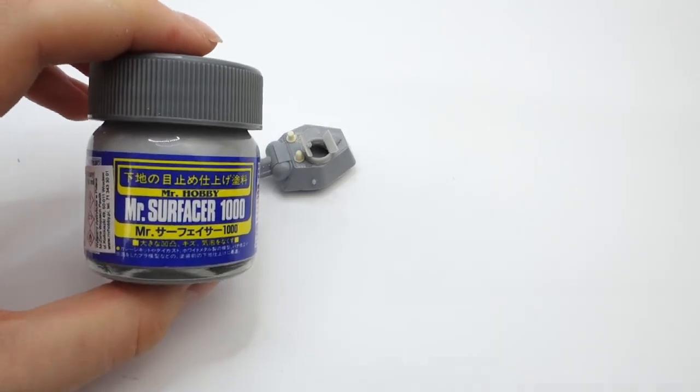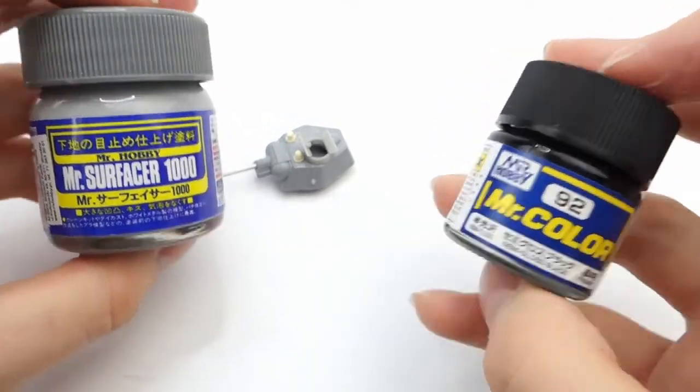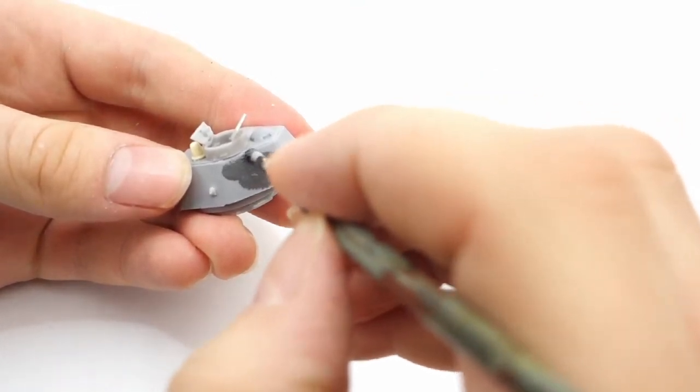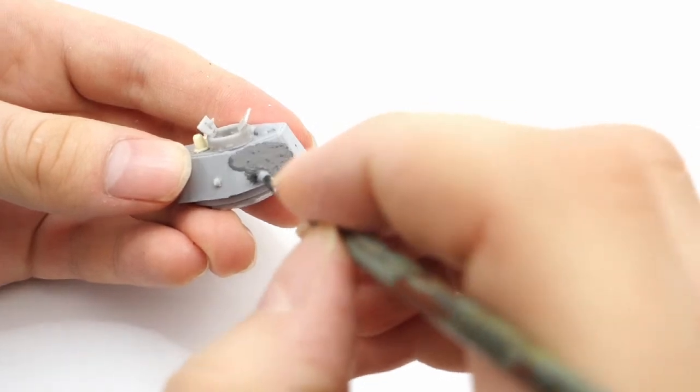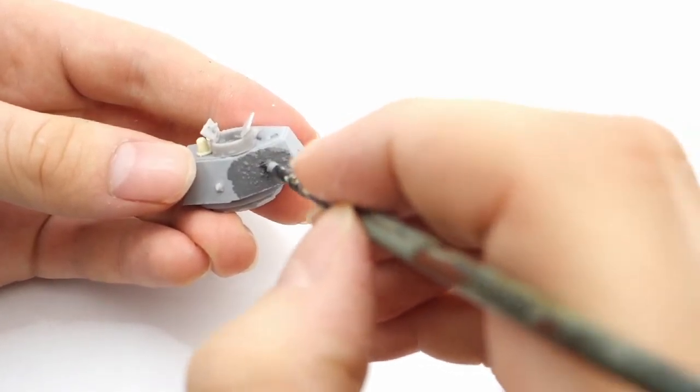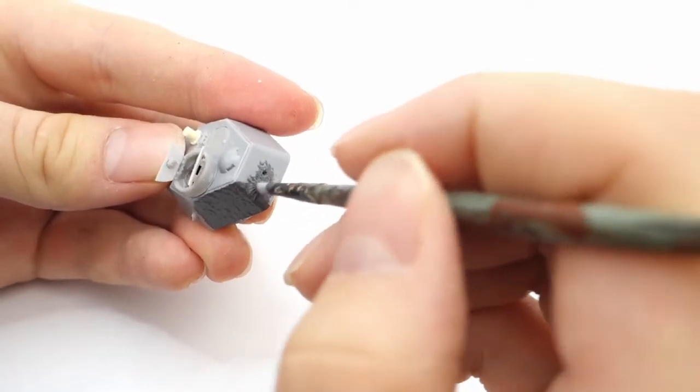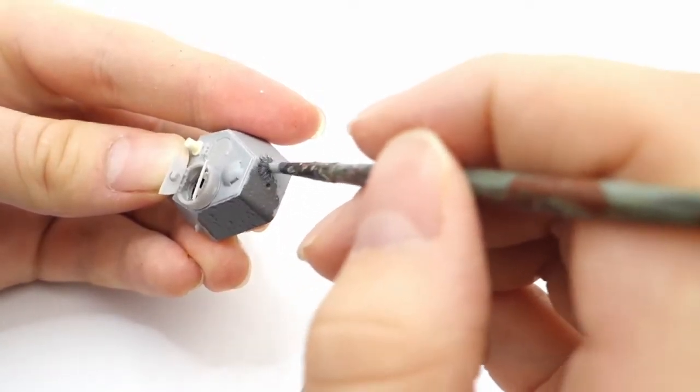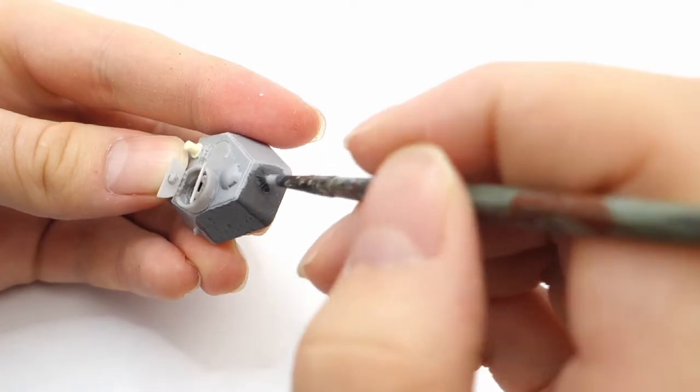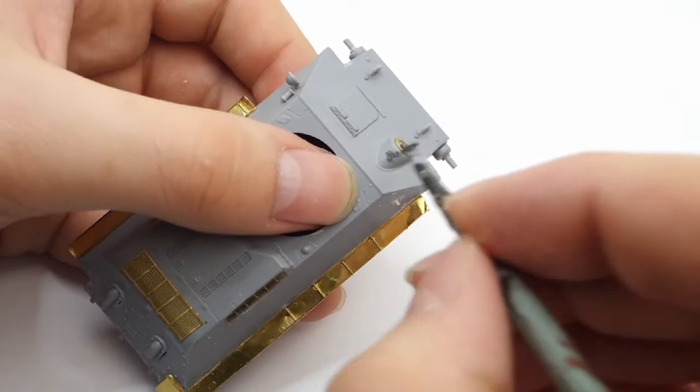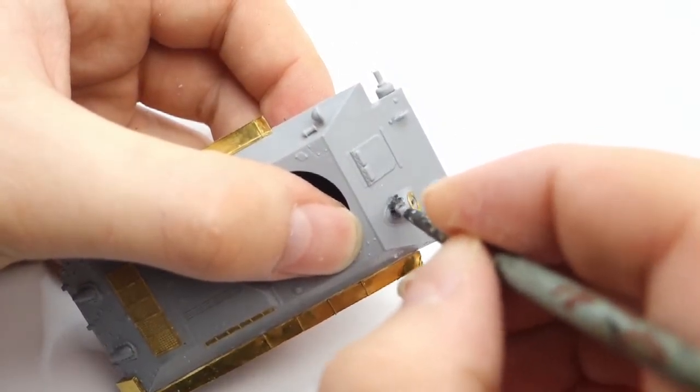To recreate the cast texture on the turret I use Mr. Surfacer 1000 and I add a few drops of black paint into it. The black paint was added to make it easier to tell the difference between textured part and the grey plastic. I also applied this cast texture on the whole gun mantlet.